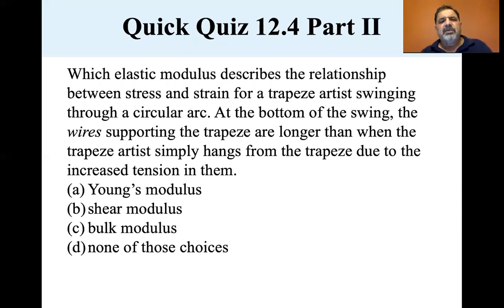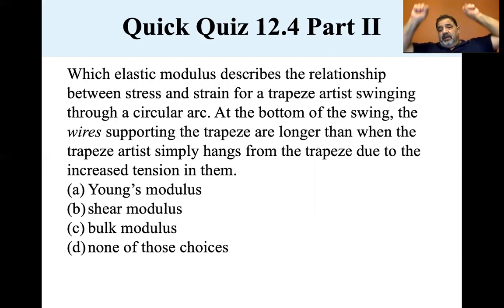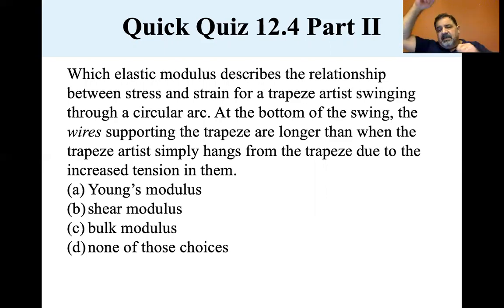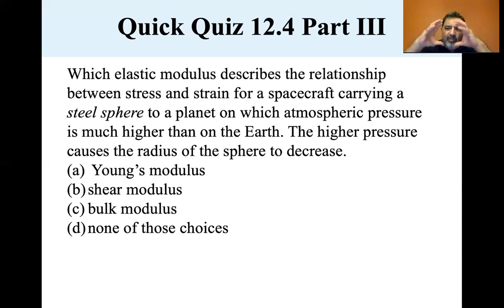Which elastic modulus describes a trapeze artist swinging through a circular arc? At the bottom of the swing, the wires are longer than when the artist simply hangs, due to increased tension from centripetal force. We're looking at elongation of the cable — that's Young's modulus. Next: a spacecraft carries a steel sphere to a planet with much higher atmospheric pressure, causing the sphere's radius to decrease. That's the bulk modulus.